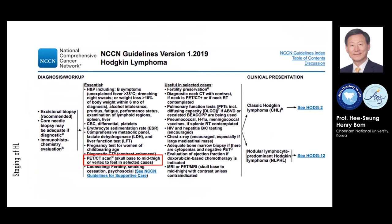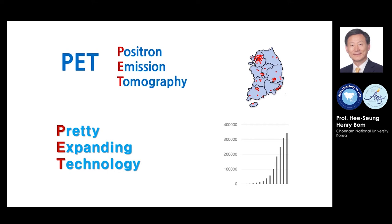FDG PET-CT is also essential in the diagnostic workup of Hodgkin lymphoma. FDG PET is an acronym for positron emission tomography, but it also has the nickname 'pretty expanding technology.' The map shown here displays the distribution of PET-CT centers in Korea — PET-CT is available in any city in South Korea. The usage of PET-CT grew exponentially because of its usefulness in the management of cancer patients.